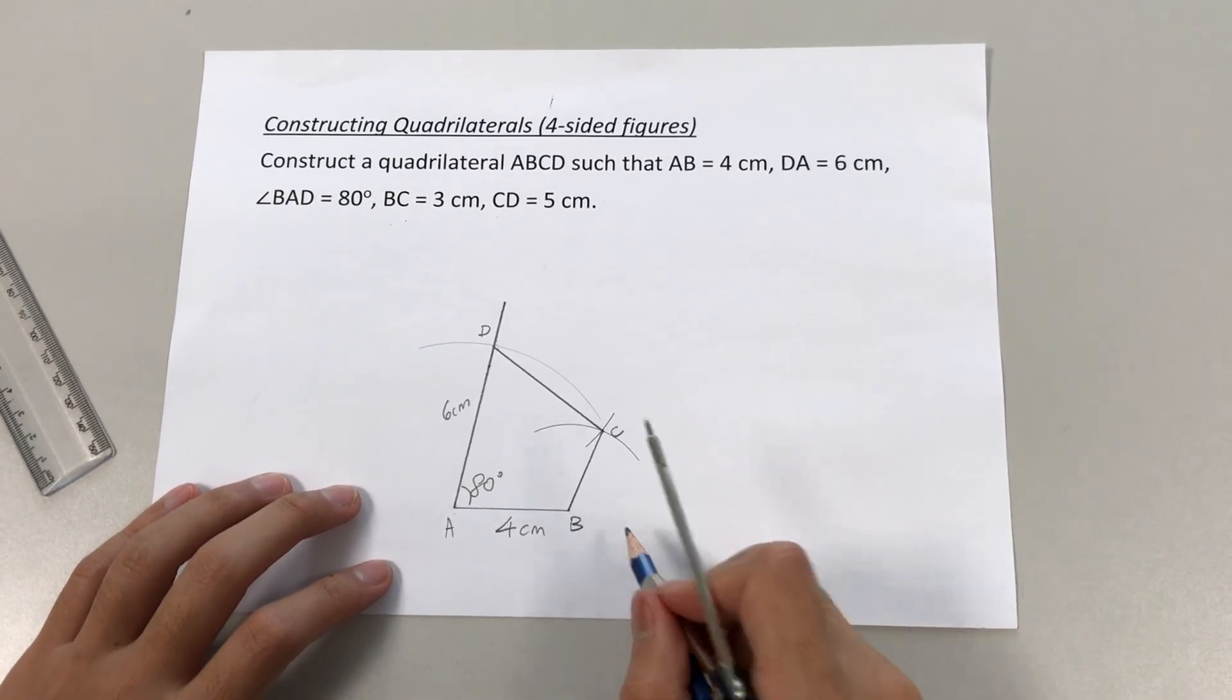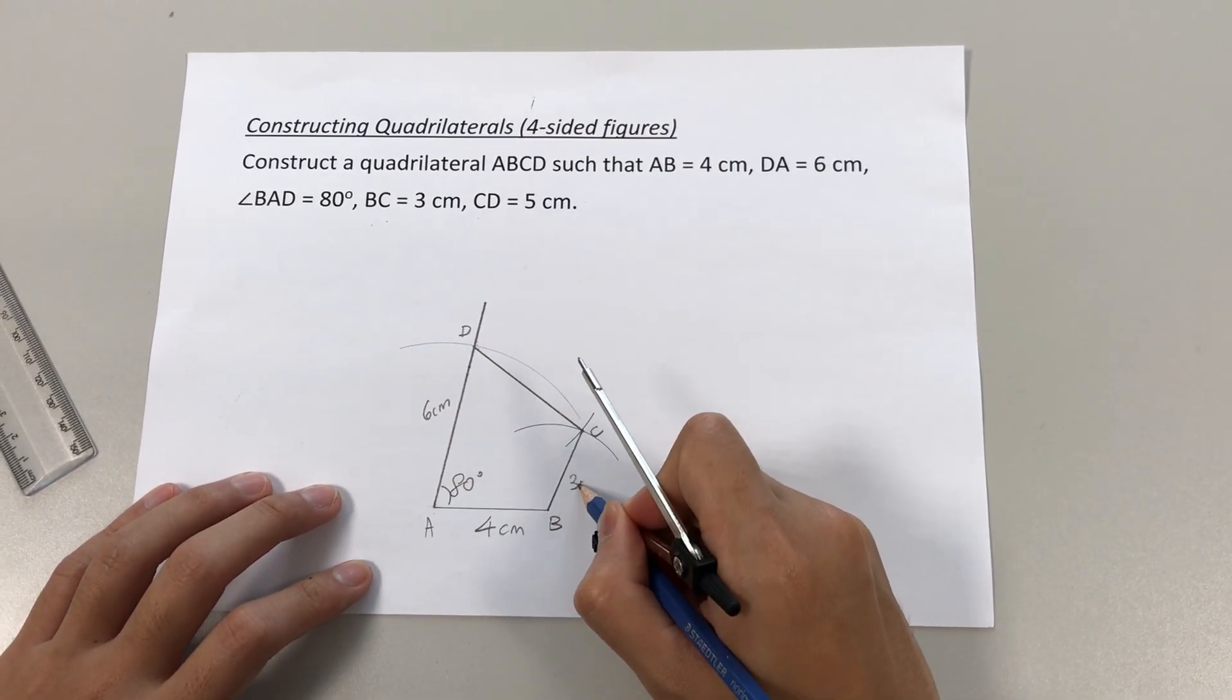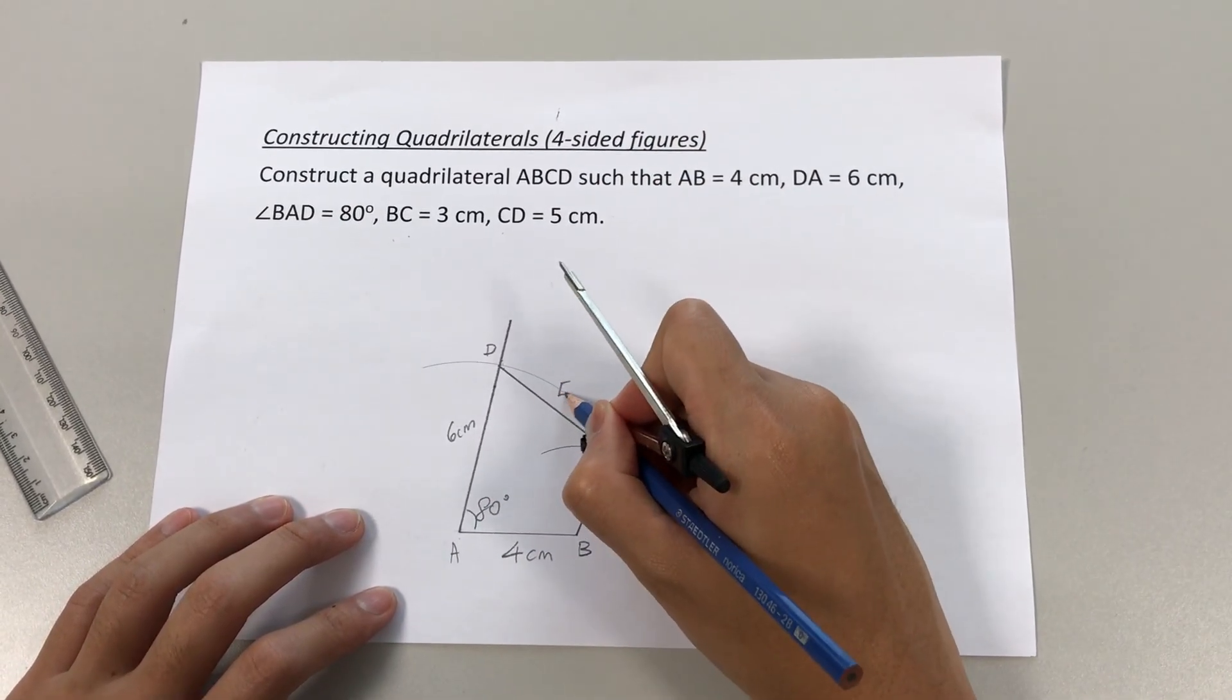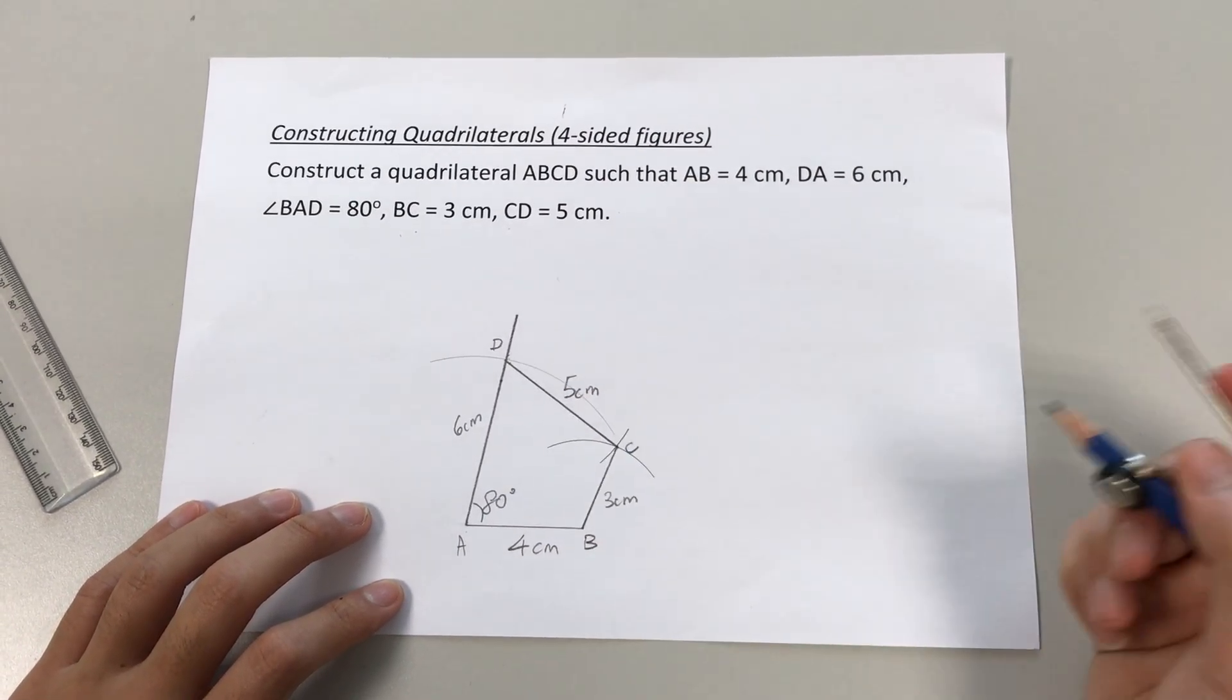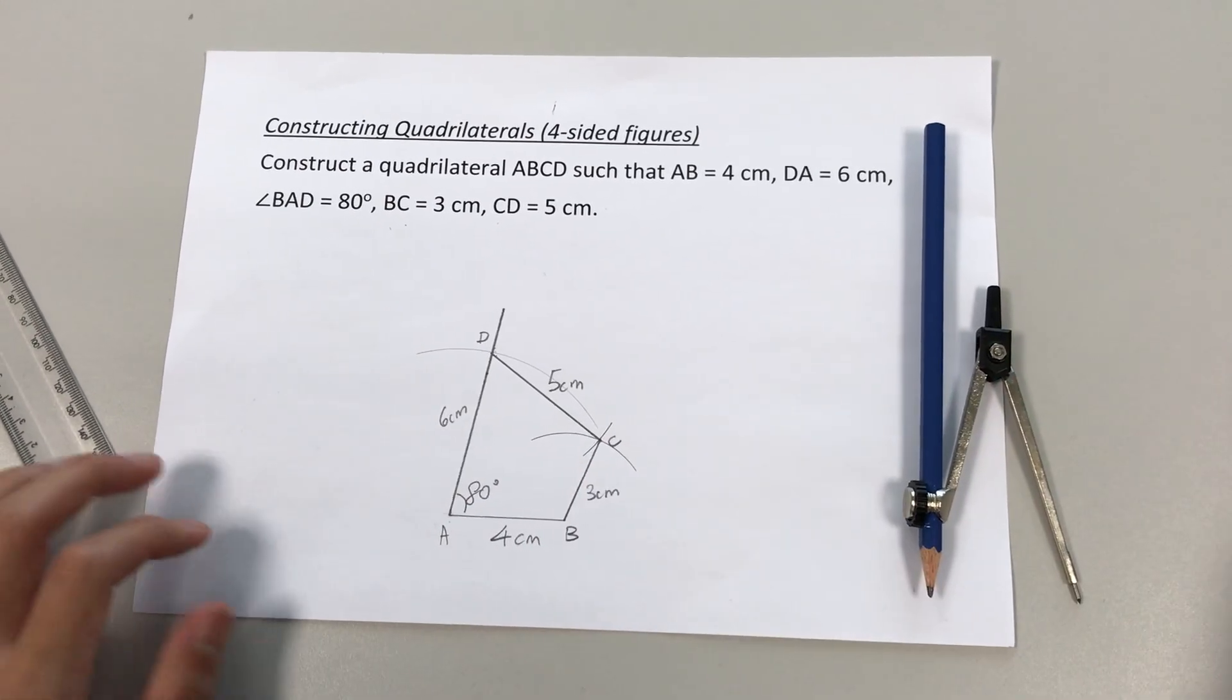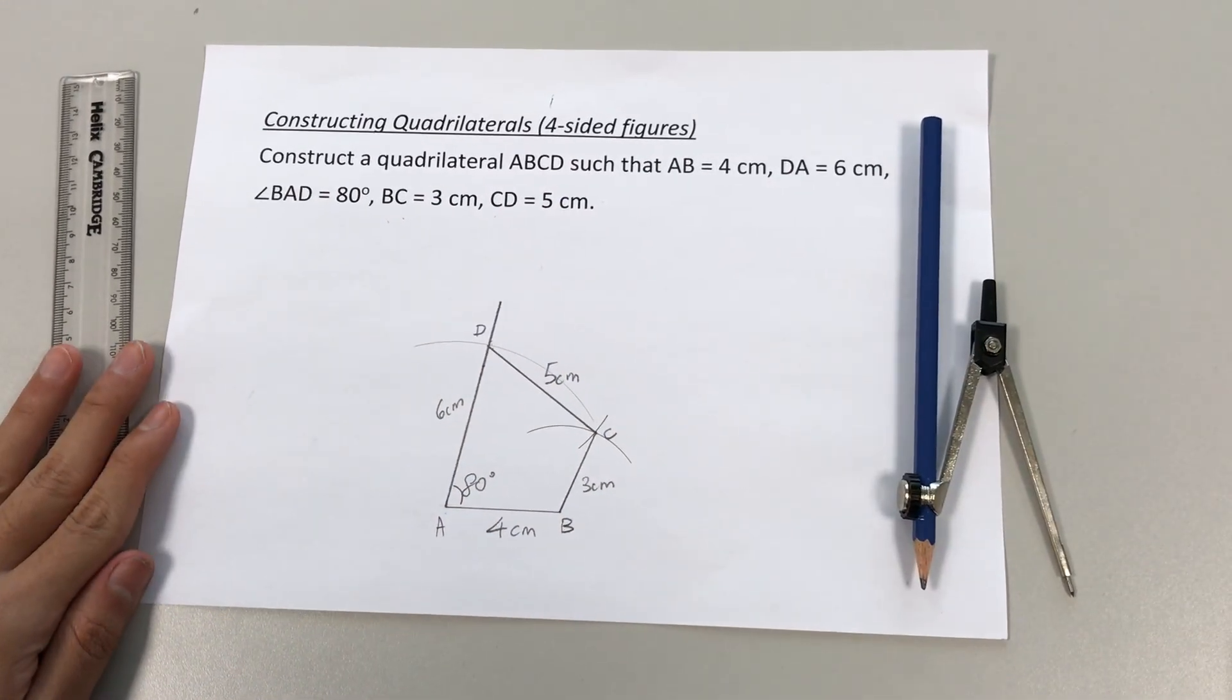All right, the last step is to label. BC, three centimeters. And C to D, five centimeters. Okay, and that, with that, we complete our four-sided figure given the above information. Thank you.